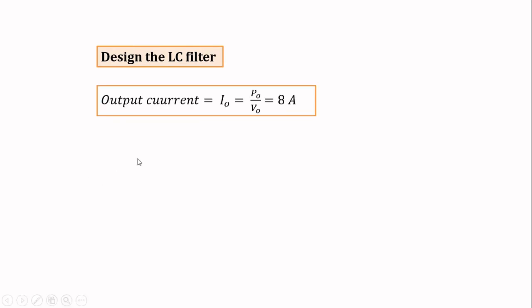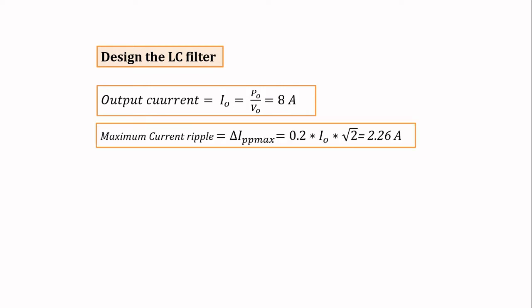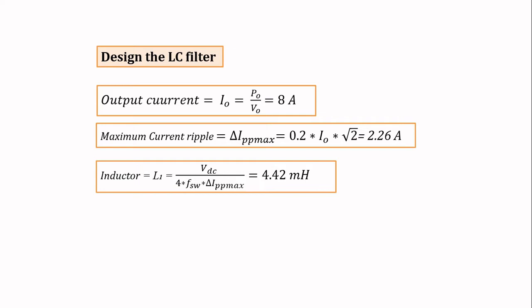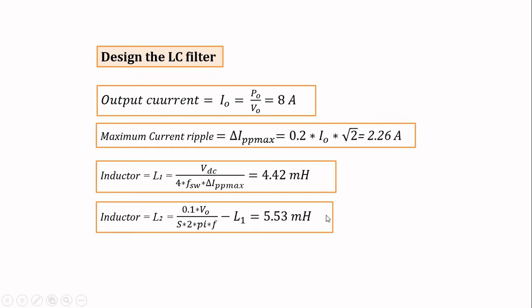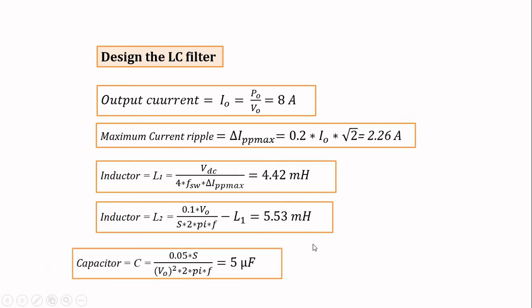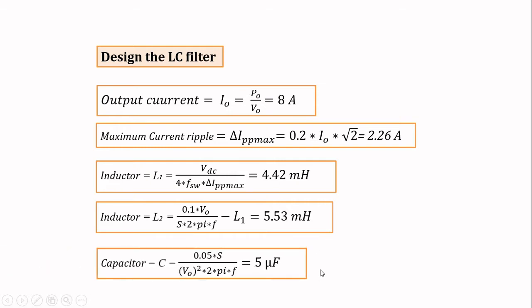To design the LCL filter, first we calculate the output current to determine the maximum current ripple, which equals 2.26 A. The filter inductance on the inverter side is calculated based on this formula, giving 4.42 mH. The filter inductance on the grid side is calculated based on this formula, giving 5.53 mH. Finally, the filter capacitor is given by this formula, resulting in 5 µF.